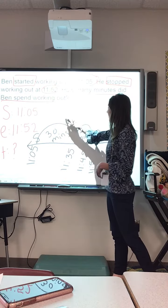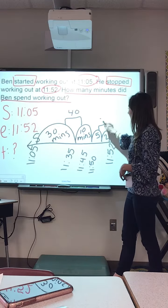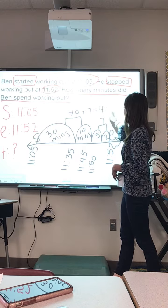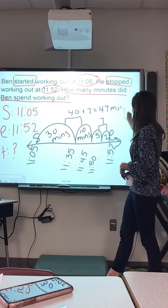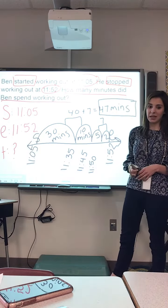I have 30 minutes plus 10 minutes is 40, plus 5 minutes plus 2 is 7. So 40 plus 7 is 47 minutes. Our total time that he spent working out is 47 minutes.